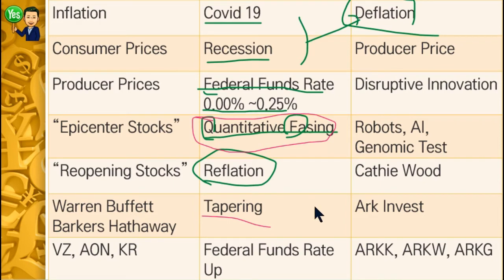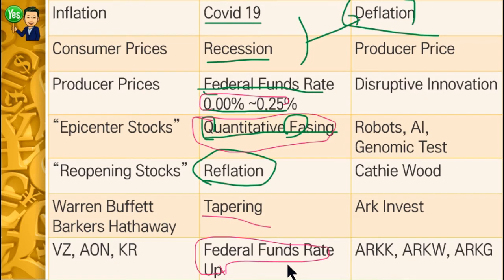After the FED started tapering, no more extra cash was going to the market. But there was still extra money in the market, so the FED sucked up more of it by increasing the FED rate. The expectation was that the near 0% FED rate would go up little by little. The FED said that depending on the speed of economic recovery, they would also control the speed of the rate increase — that's how they controlled inflation. That's the timeline story.